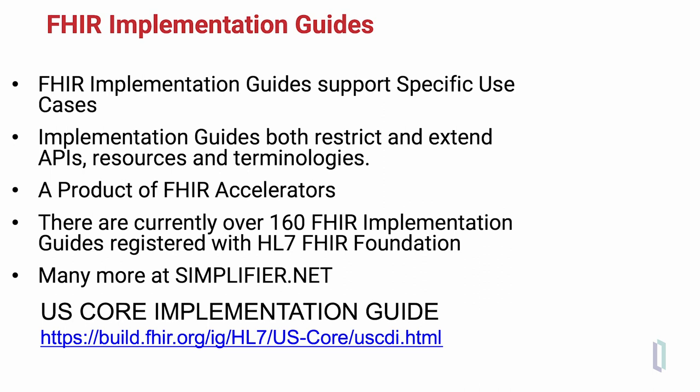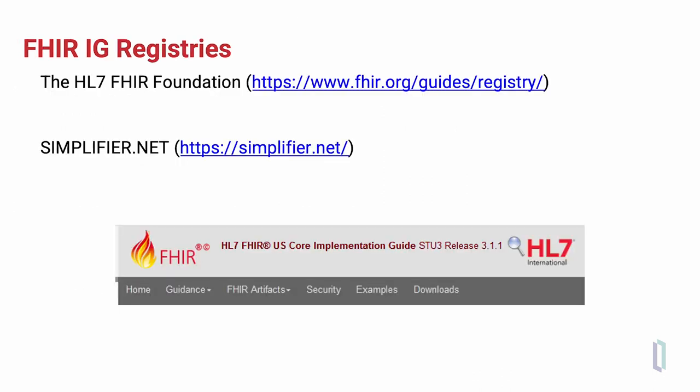The U.S. Core Implementation Guide is an implementation guide for some 29 different FHIR profiles that comply with U.S. regulations.